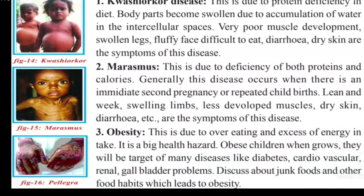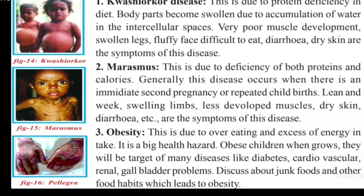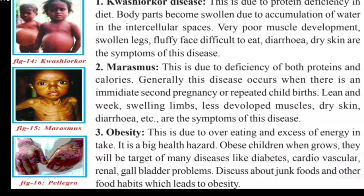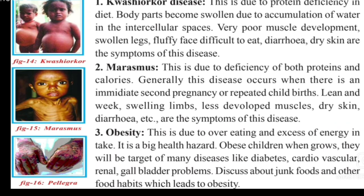The next disease is Marasmus, due to deficiency of both proteins and calories. This disease generally occurs when there is an immediate second childbirth — the children are affected though the mother may not be. Symptoms include lean and weak body, swelling of limbs, less developed muscles, dry skin, and diarrhea.